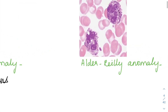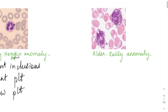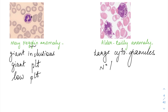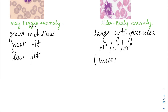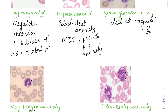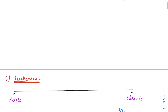The next one is Alder-Reilly anomaly. Here, the neutrophil granules are quite coarse and thicker. This is what we see in Alder-Reilly anomaly, where you see large cytoplasmic granules not only in neutrophils but also in lymphocytes and monocytes. This is actually seen in mucopolysaccharidosis. So Alder-Reilly anomaly, May-Hegglin anomaly, Chediak-Higashi syndrome, hypersegmented and hyposegmented neutrophils — these can all come as image-based questions.